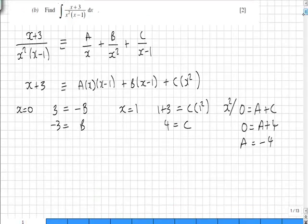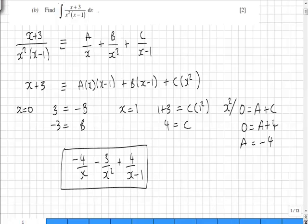We now have our values of A, B, and C. Substituting them in, we get minus 4 over x minus 3 over x squared plus 4 over x minus 1 as our expression in partial fractions.